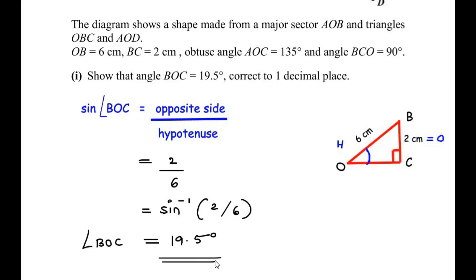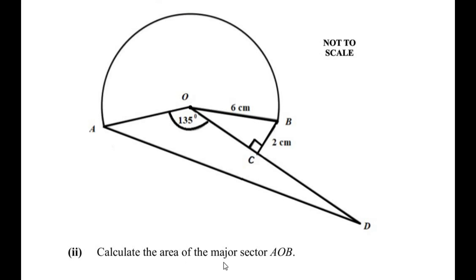The next sub-question asks us to calculate the area of the major sector AOB. This is the sector they are referring to. To find it, we need the central angle — in this case the reflex angle AOB. From part one, we found angle BOC as 19.5 degrees.